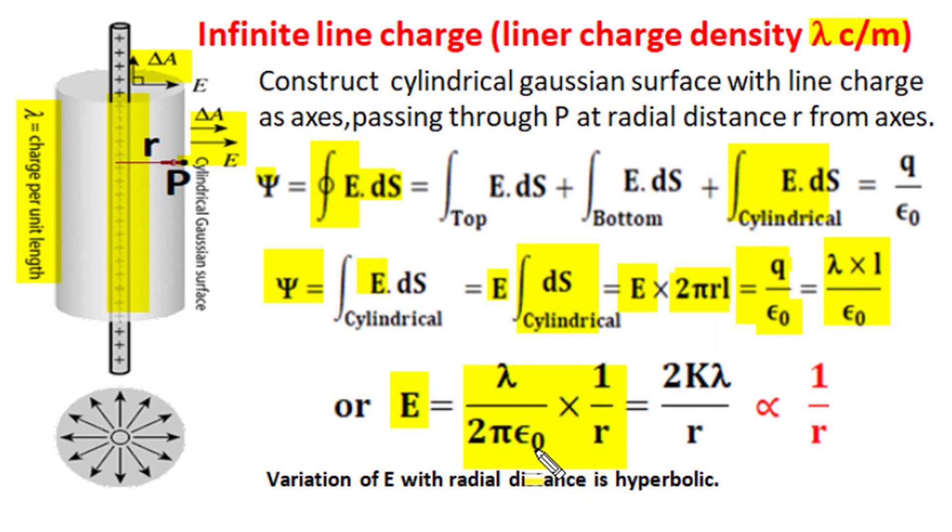If 1 upon 4πε₀ is taken as k or 9 into 10 power 9 then we can say the strength of electric field can also be written as 2kλ over r where k is 9 into 10 power 9 constant.